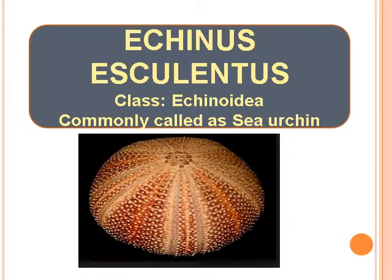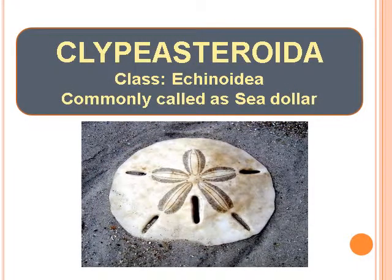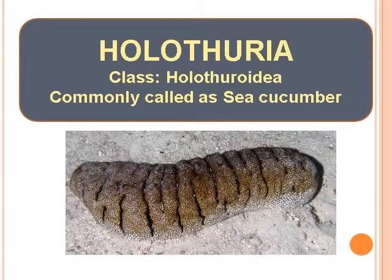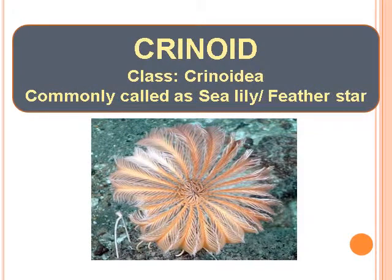Echinus Asculentus, class Echinodermata, commonly called as Sea Urchin. Clipasteroidea, class Echinodermata, commonly called as Sea Cucumber. Crinoid, class Crinoidea, commonly called as Sea Lily or Feather Star.